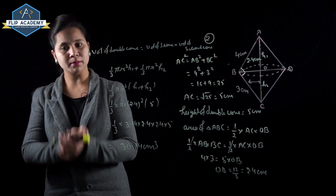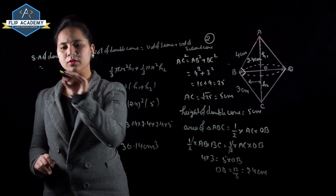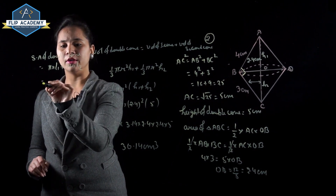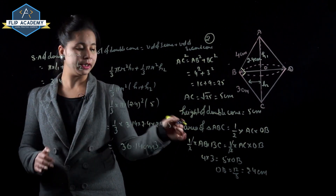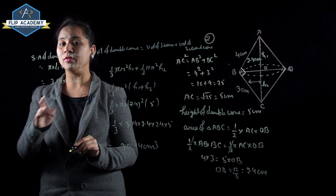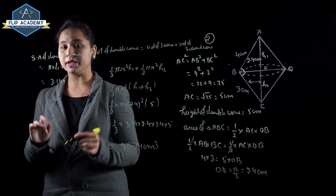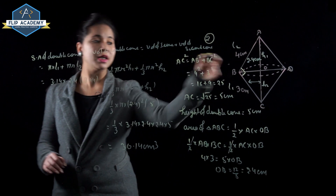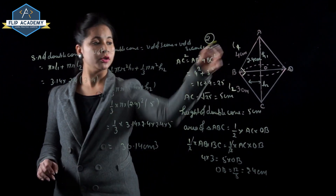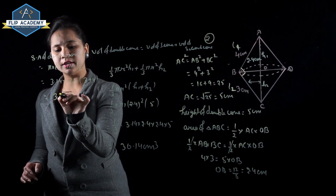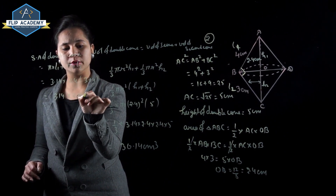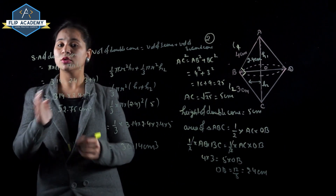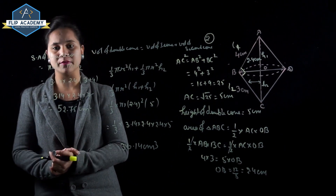Surface area of double cone = surface area of first cone + surface area of second cone = πrl1 + πrl2 = πr(l1 + l2). With r = 2.4, l1 = 3, l2 = 4: surface area = 3.14 × 2.4 × 7 = 52.75 cm².